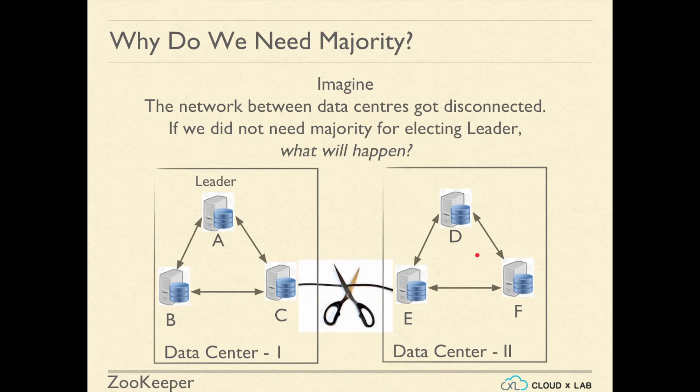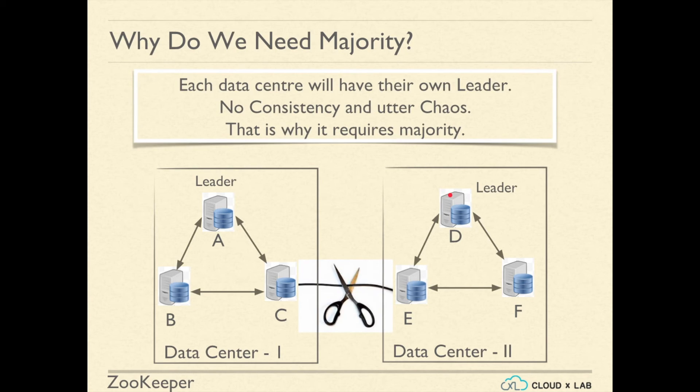If we did not need majority for electing a leader, what would happen? Each data center will elect their own leader, and there will be two independent nodes accepting modifications from users.